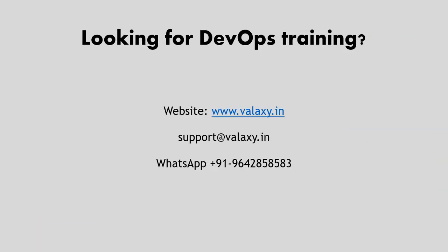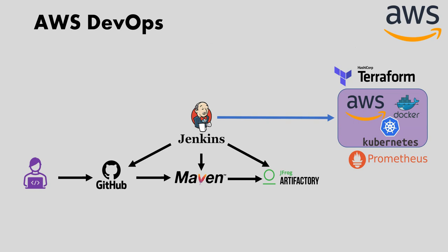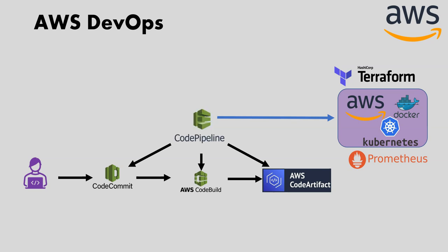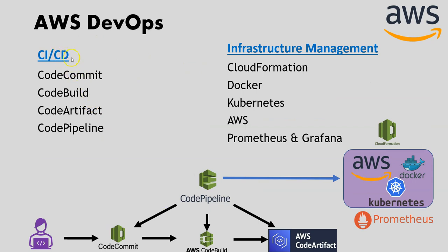Now, how can we set up the same DevOps stack in AWS? If you are looking for AWS plus DevOps training or Azure DevOps training, you can reach out via the contacts shown. For AWS DevOps, we use AWS native services as alternatives: for version control we have CodeCommit, for build we have CodeBuild, for artifact management we have CodeArtifact, for CI/CD integration we use CodePipeline, and for infrastructure provisioning we can use CloudFormation — though Terraform integrates with most clouds and can still be used.